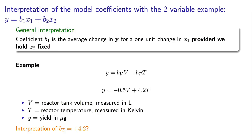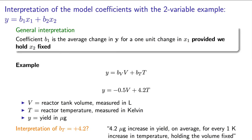You should have hopefully said that that coefficient bt equal to 4.2 indicates that the yield will increase by 4.2 micrograms, on average, for every one kelvin increase in temperature, when holding the tank volume constant.